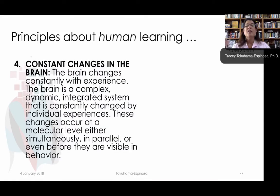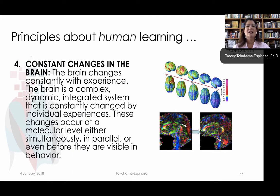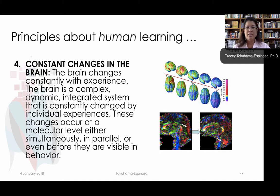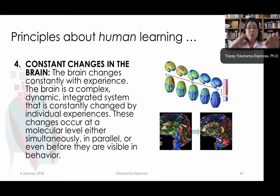Another concept has to do with the constant changes in the brain. Your brain is not static. At a molecular level, it is literally changing every single day. What's really important for us to understand is that sometimes these changes in the brain are complex. They're dynamic. It's an integrated system, and it's constantly changed by the individual's learning experiences. These changes at the molecular level can happen simultaneously and in parallel, or even before you can see the behavior.